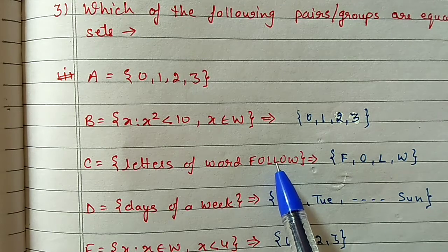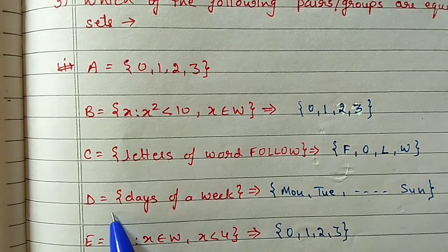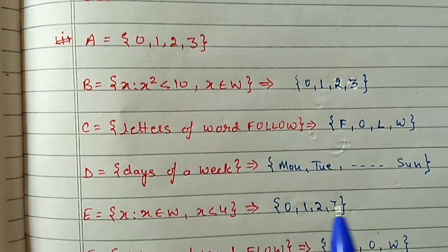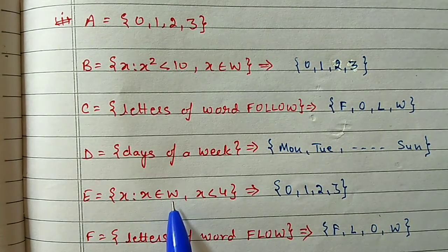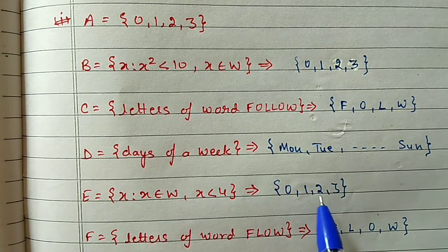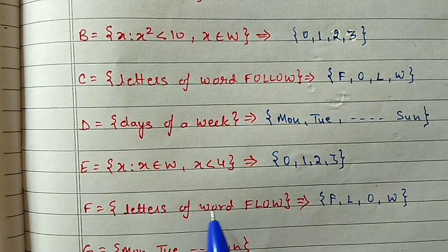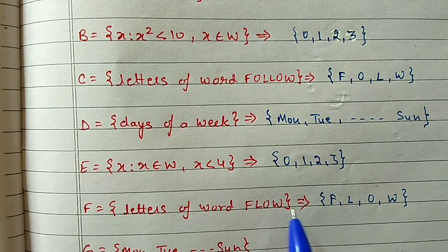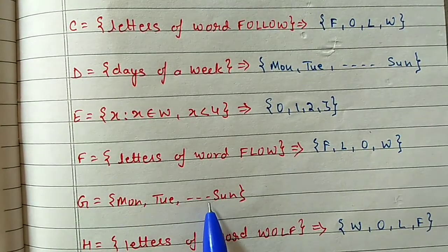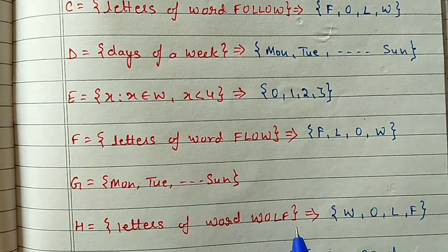Set D is days of the week: Monday, Tuesday, Wednesday till Sunday. Set E is {x such that x is a whole number and x < 4}: whole numbers less than 4 are 0, 1, 2, 3. Set F is the letters of the word 'flow': F, L, O, W. Set G is already given in tabular form: Monday, Tuesday till Sunday. Set H is the letters of the word 'wolf': W, O, L, F.